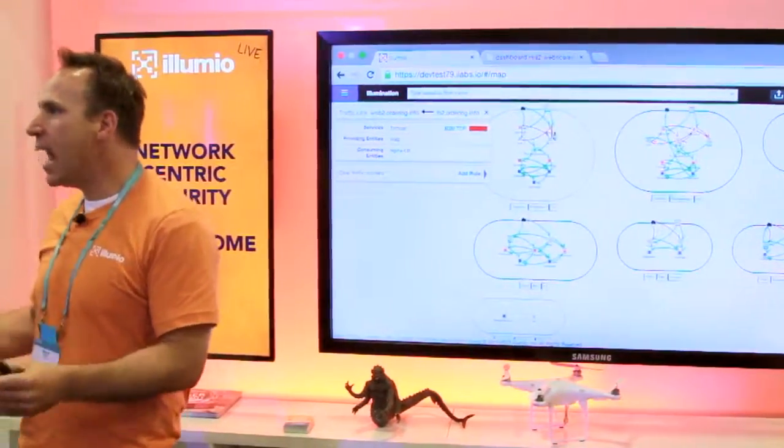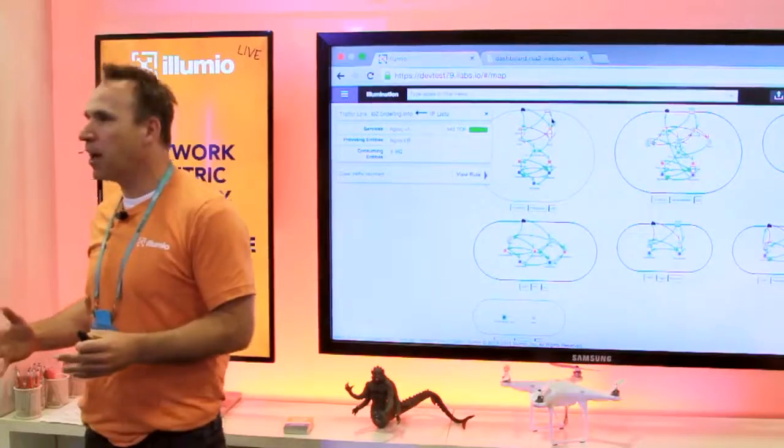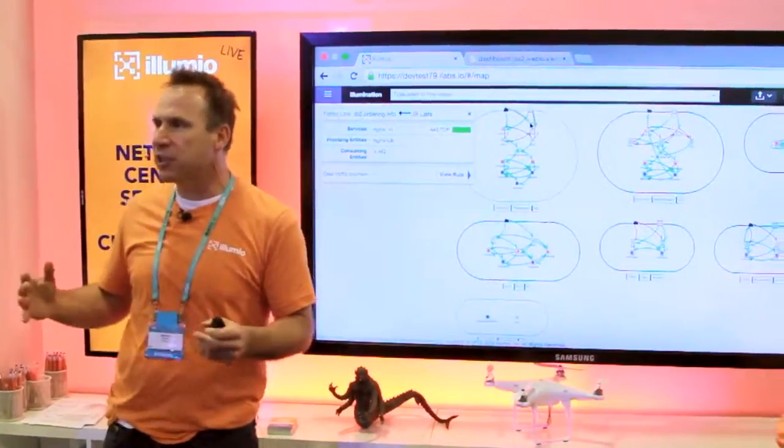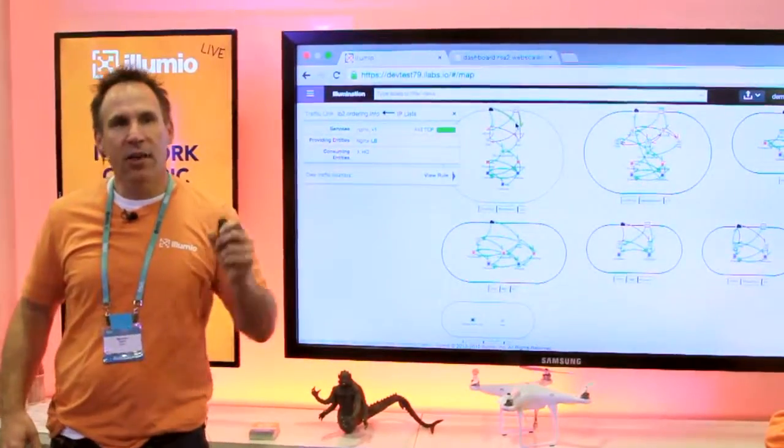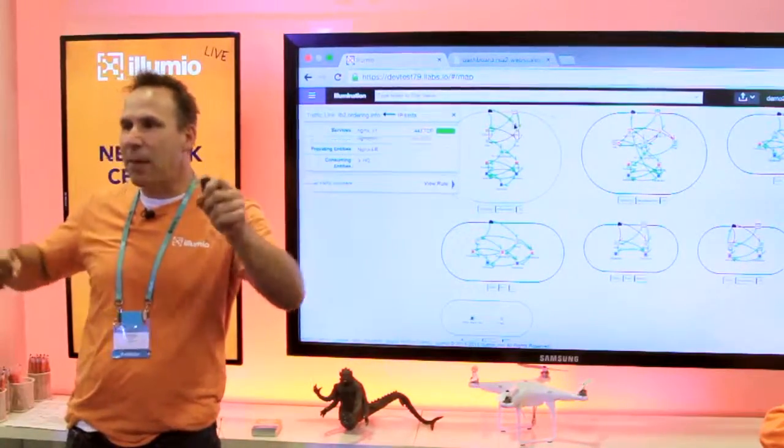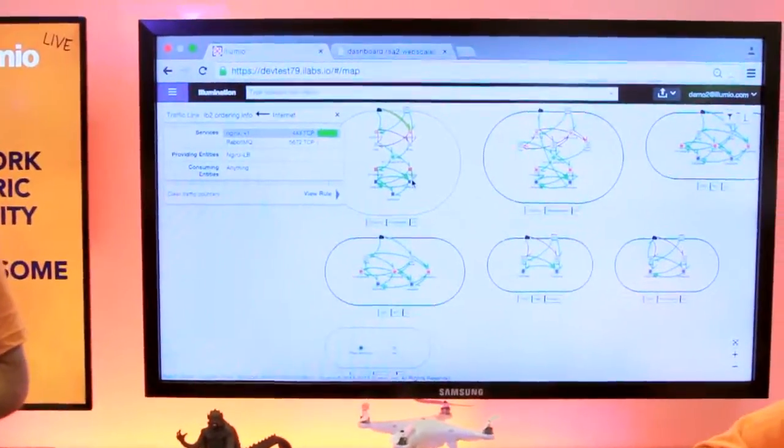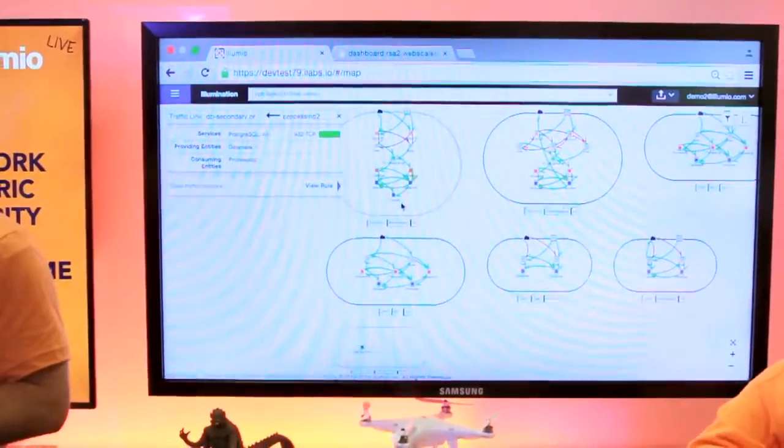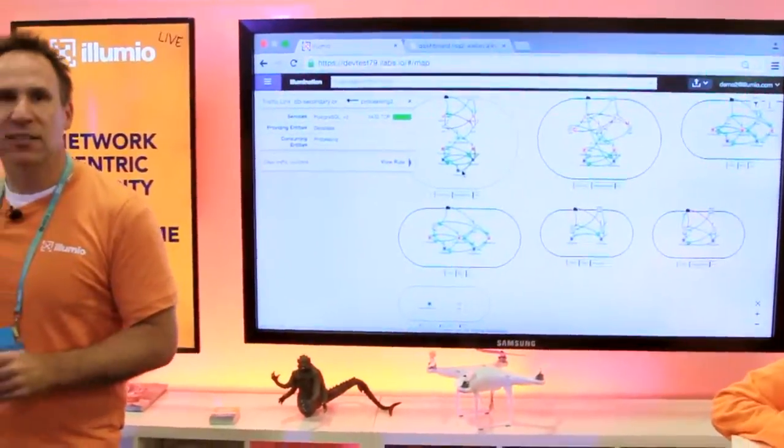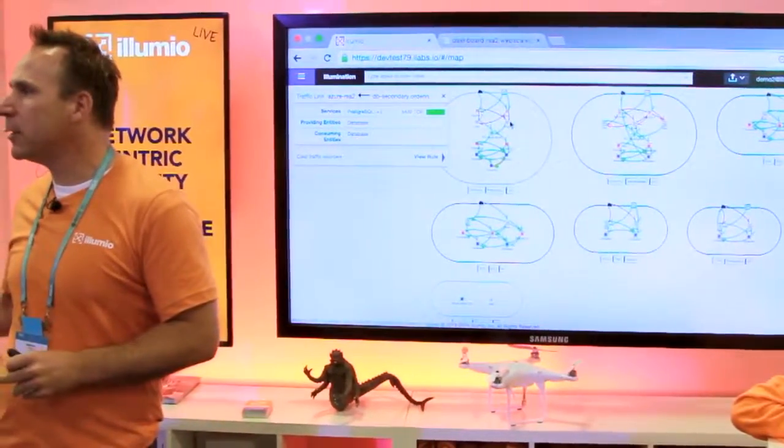And let's face the facts. Network-centric security is super cumbersome. How do you write your security policies today? You say zone A could talk to zone B or this IP address could talk to that IP address. What if we had to take your security team and say, look, I want you to start writing rules for an application, but here's the deal. I'm not going to tell you anything about the underlying network.